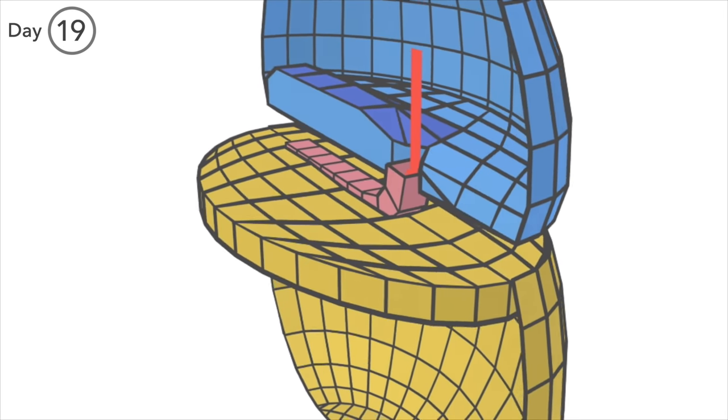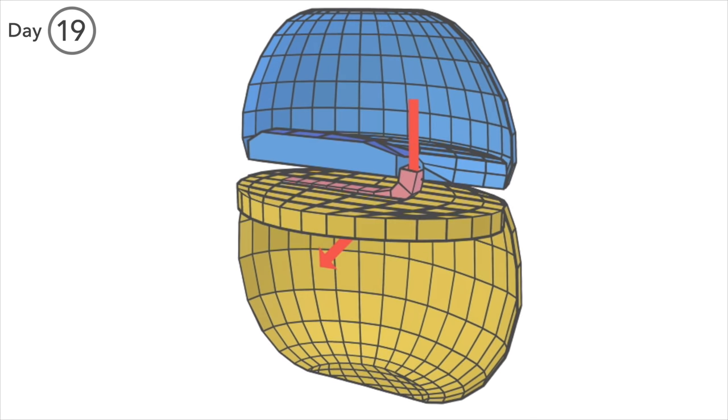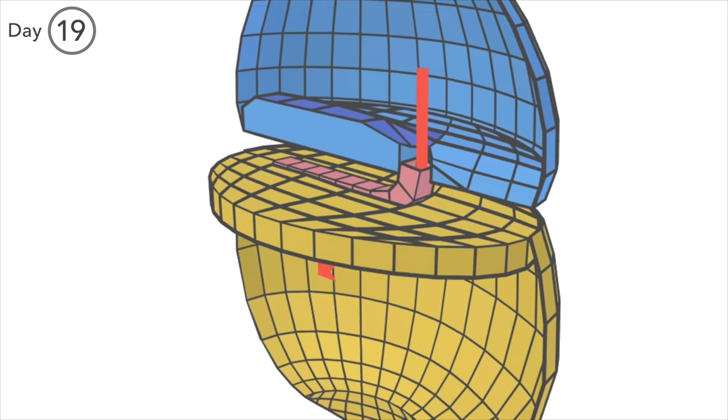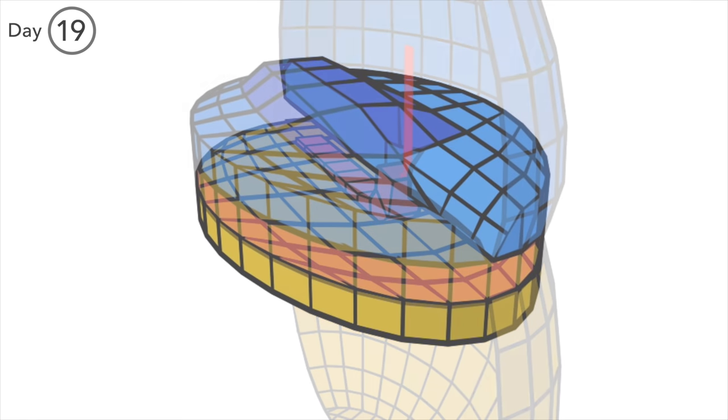And this passage is only temporary and it's known as the neurenteric canal. It's thought to be important in equilibrating pressure between these two spaces. Our arrow travels through the notochordal plate into the yolk sac.